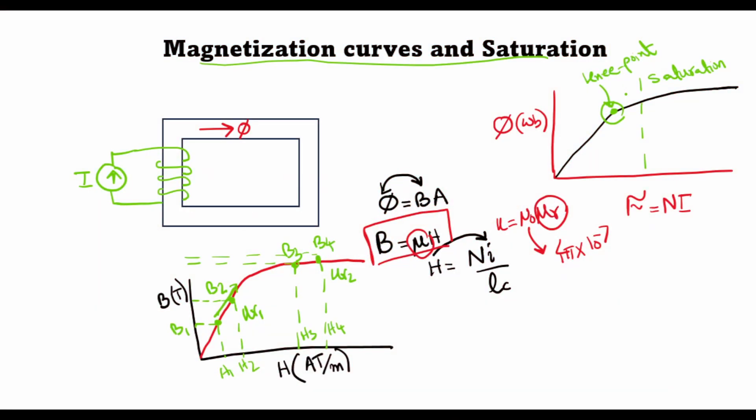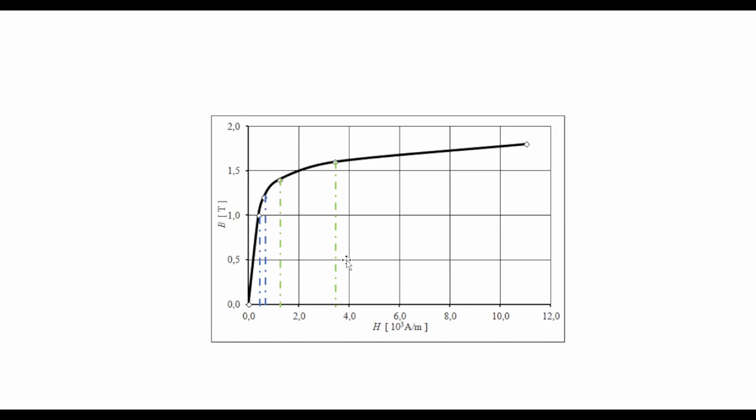Let's look at a typical magnetization curve. This here is the magnetization curve of steel, and here around this point you can see this is the knee point. The curve is linear up to this point and from here on saturation starts to set in.